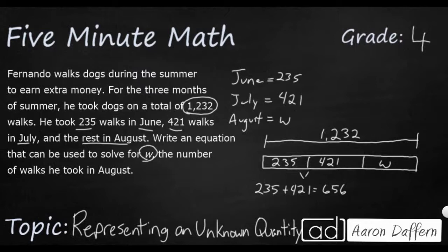And if I were to take that away from 1,232, take that away, I'm going to get my answer. So let's see what that is first. That's going to be 6, that is going to be 7, and that's going to be 5. So it looks like 576. But you notice I wrote two different equations. I need to write one equation.